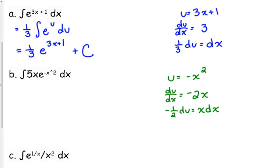So we are going to be replacing the dx with negative 1 half du, so we have 5 times negative 1 half times the integral of e to the u du. So we have got negative 5 halves e to the negative x squared plus c as our solution.